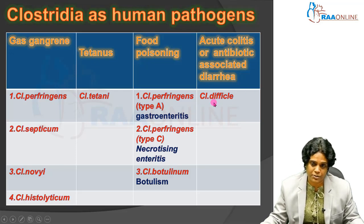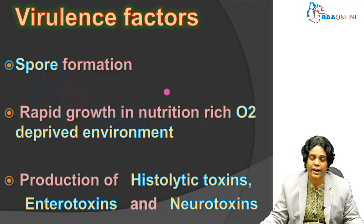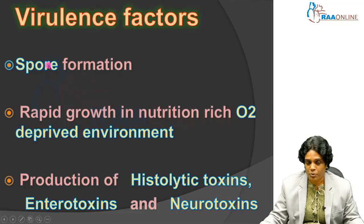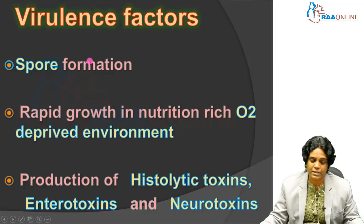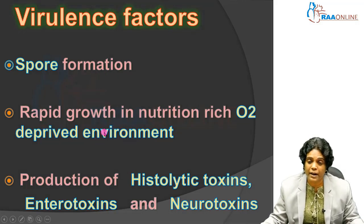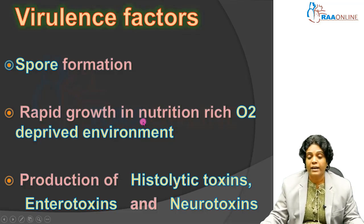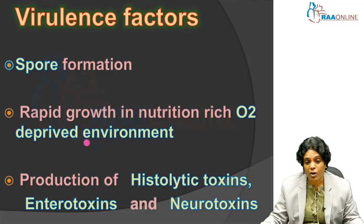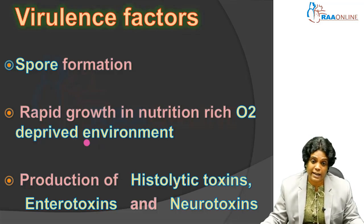In this lecture we will be focusing on Clostridium difficile. The virulence factors that help these organisms establish themselves and cause disseminated infection include: first, they produce spores, which is a major factor helping bacteria survive in adverse environmental conditions — that's why we find spores of Clostridia in soil. When they get a favorable environment, they germinate and initiate infection. Second, they can survive in oxygen-deprived environments when nutrition is adequate. Third, they produce a lot of toxins — histolytic toxins, enterotoxins, neurotoxins, and some even produce cytotoxins, like Clostridium difficile which produces cytotoxin.